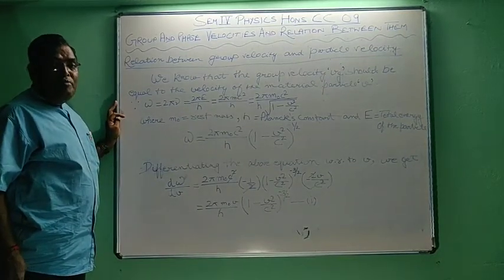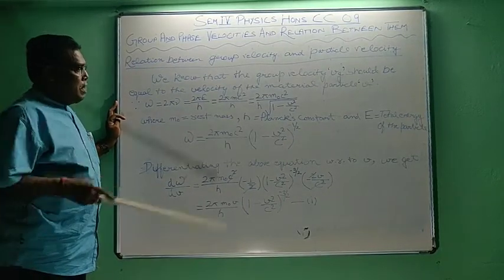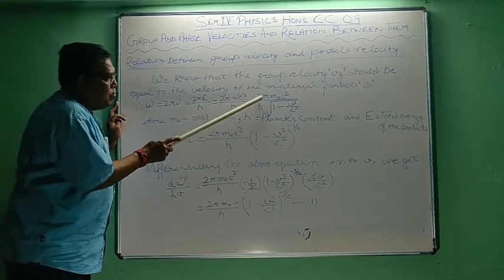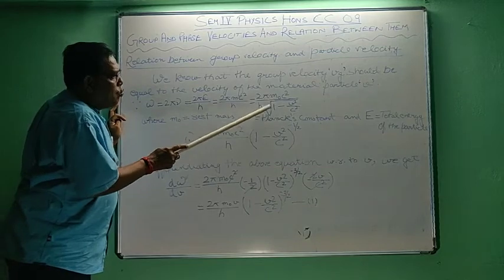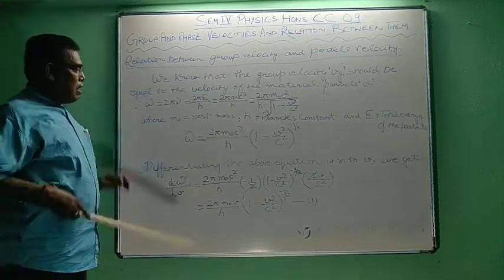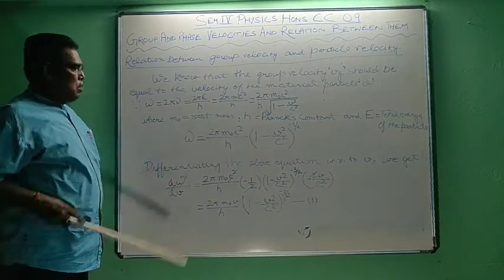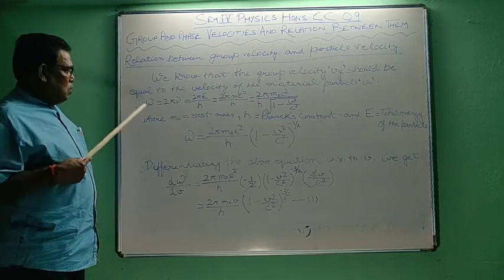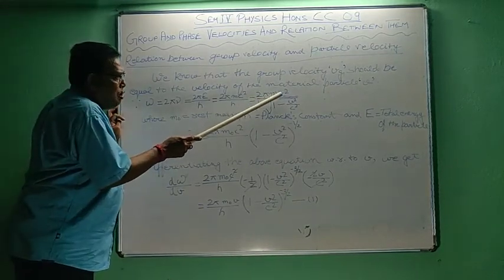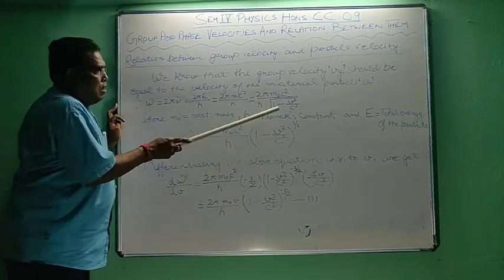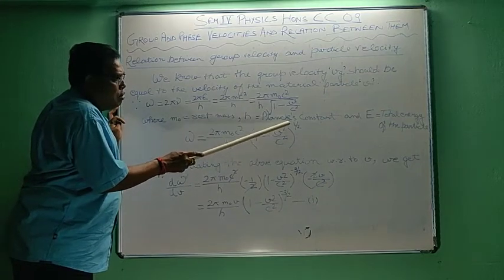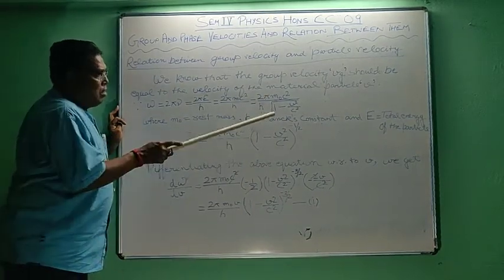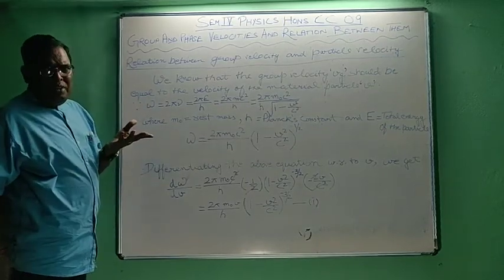By the formula for dependence of mass on velocity in relativity: m = m₀ / √(1 − v²/c²). Substituting this value of m, we get omega = 2π·m₀·c² / (h · √(1 − v²/c²)), which can be written as (2π·m₀·c²/h) · (1 − v²/c²)^(−1/2), where m₀ is the rest mass, h is Planck's constant, and E is the total energy of the particle.